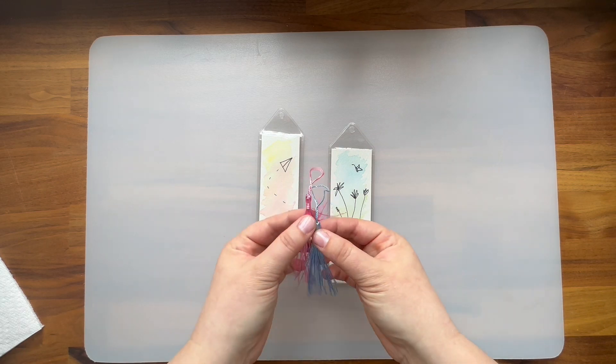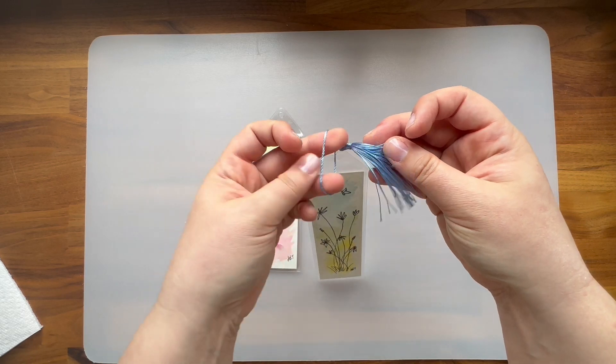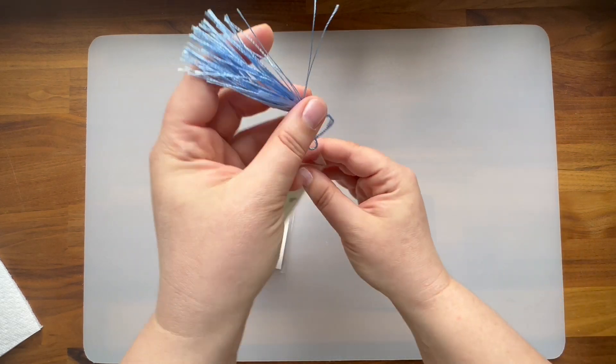For the final step, loop your bookmark tassel through the hole at the top of the plastic cover, and then pull the tassel through the loop just like this.